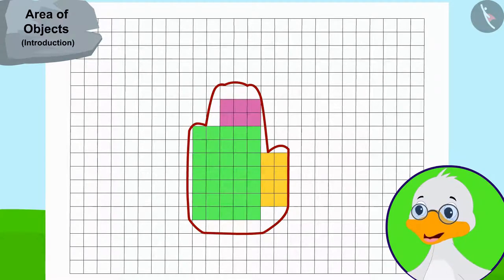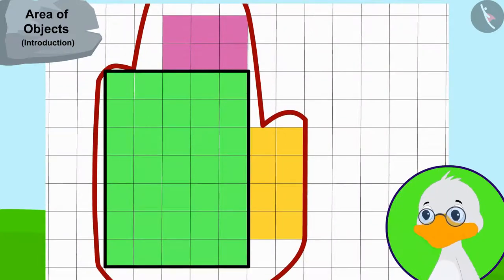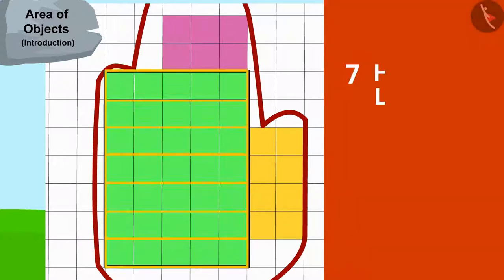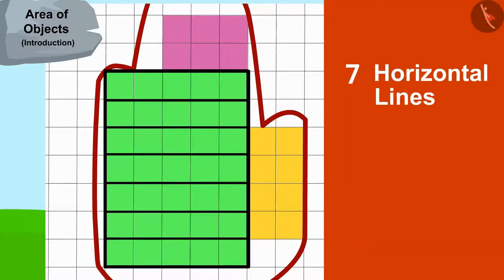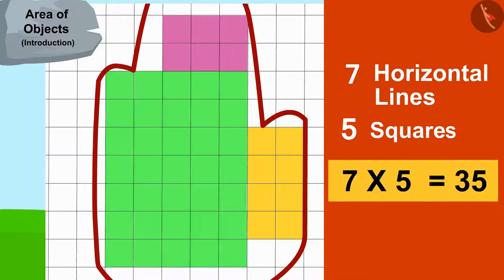Now, I will first find the area of this rectangle. This rectangle has seven horizontal lines and each line has five squares in it. This means there are seven times five or thirty-five squares in this rectangle.